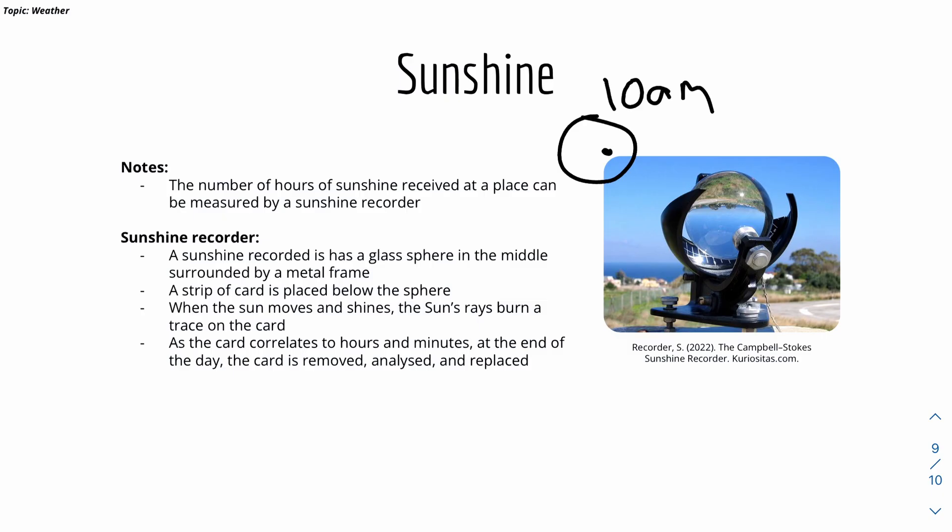The sun will basically shine on the glass sphere. And the glass sphere will reflect the light, the sunlight, and it will burn this place, which corresponds to 10 a.m. So it's quite magical. The card basically correlates to hours and minutes. At the end of the day, the card is removed, analyzed, and replaced.